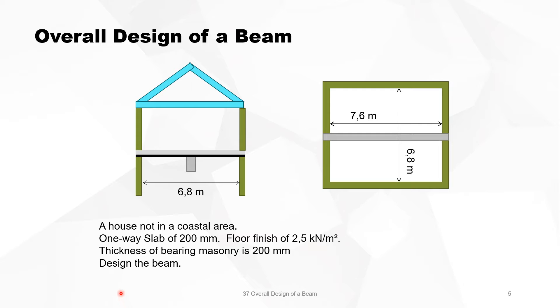The example that we are going to work out is a simple example of a beam on a certain level of a house, a house situated not in a coastal area. We take a beam of the living room and it's a one-way slab. This almost squared 6.8 by 7.6 meters, we divide it in two by a beam. The floor finish is 2.5 kN per square meter and the thickness of the bearing masonry is 200 mm. We want to make an overall design of this bearing beam.